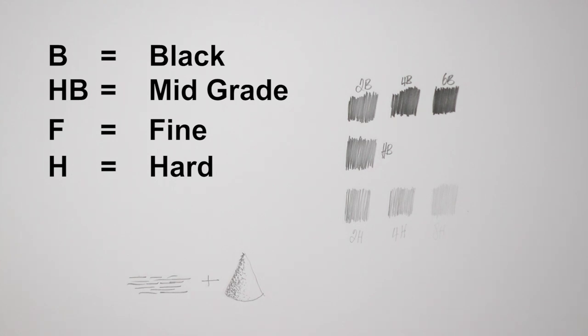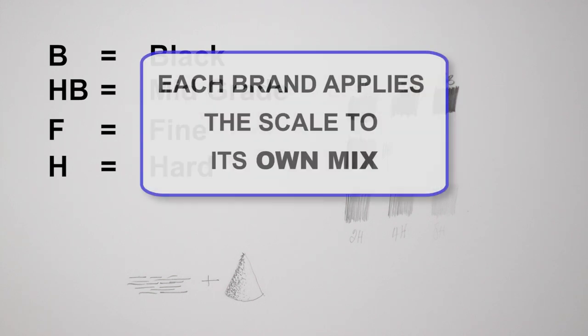I must give you a warning though. There is, as I said, a hardness scale from 10B to 10H but the scale is relative. Each brand applies the scale to its own mix. One manufacturer's 2B or HB, for example, is not the same as another brand's 2B or HB.